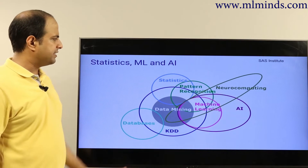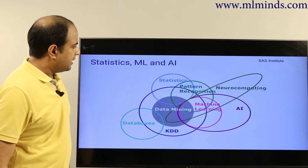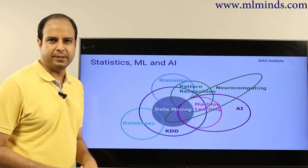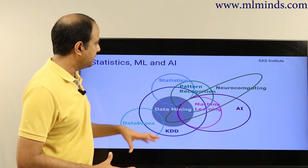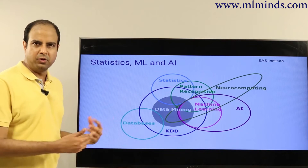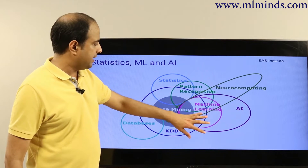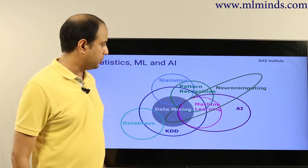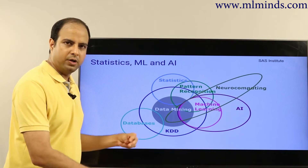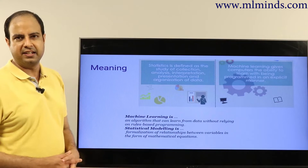There's a nice visualization to show how these different fields are related. Statistics and machine learning share some common concepts, but otherwise they are quite different from each other. Over the next slides we will see how they differ. Machine learning is a part of AI, and there are other related fields. We'll try to understand the difference between statistics and machine learning.